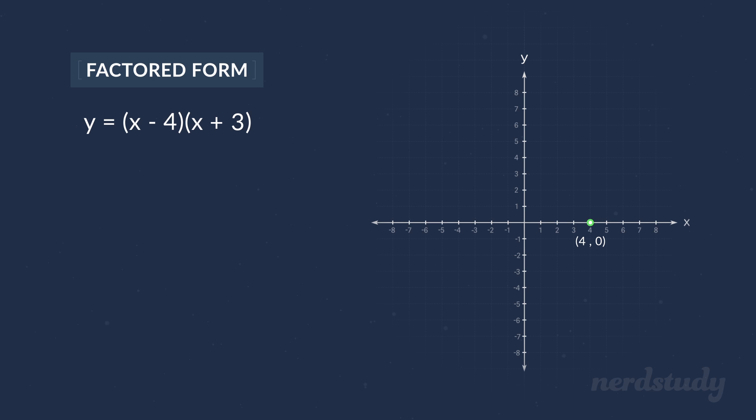Similarly, I can immediately realize that if x equals negative 3, then y would equal 0 because this part now equals 0, and 0 times anything is 0. So we'd have ourselves another point at negative 3 and 0.